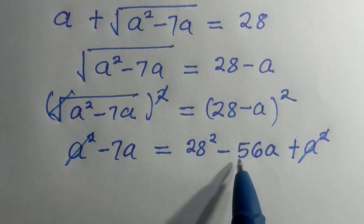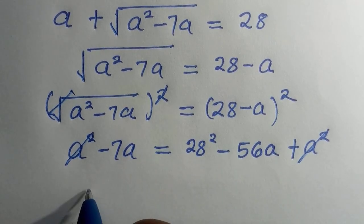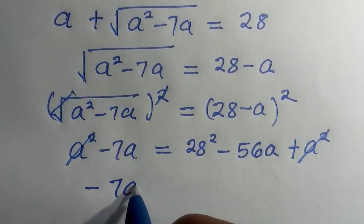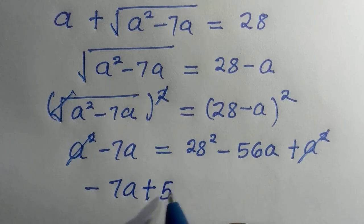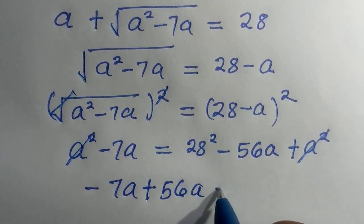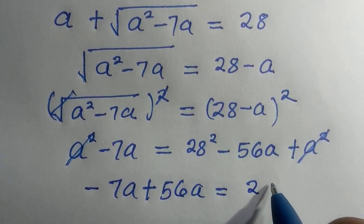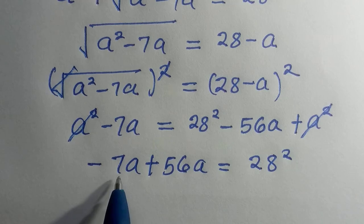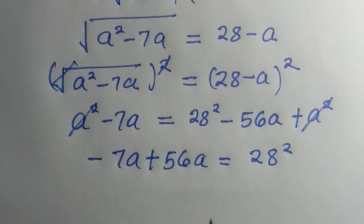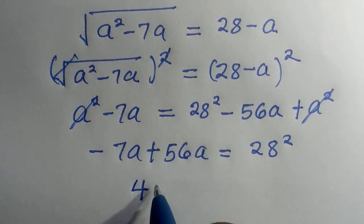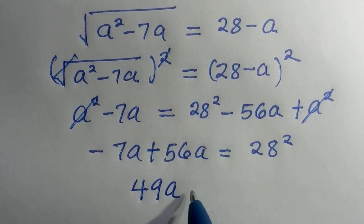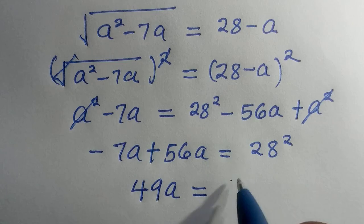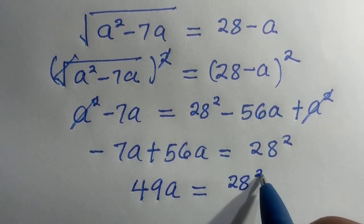So therefore, we take -56a to this side. Here is -7a + 56a = 28². So, -7a + 56a, that gives us 49a equals, we have this as 28².